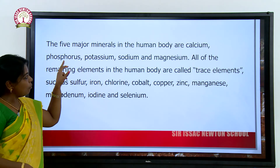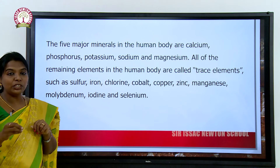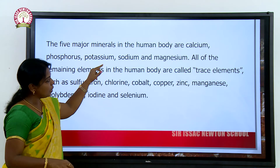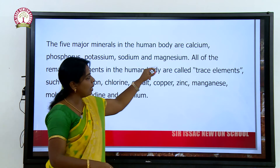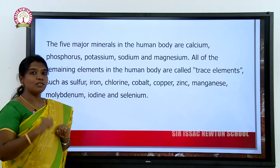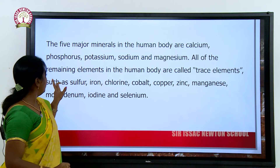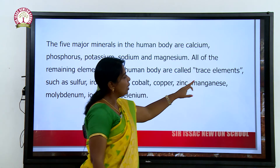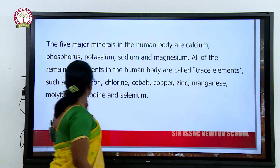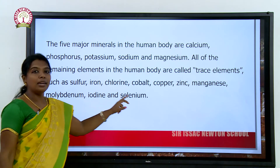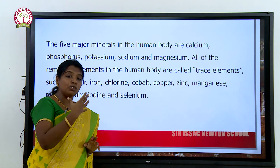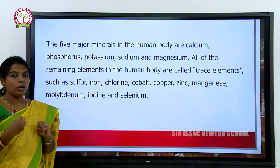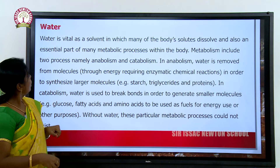The five major minerals the human body needs are phosphorus, calcium, potassium, sodium, and magnesium. Some trace minerals are also needed: sulfur, iron, chlorine, cobalt, copper, zinc, manganese, molybdenum, iodine, and selenium. These are the trace elements which our body requires.